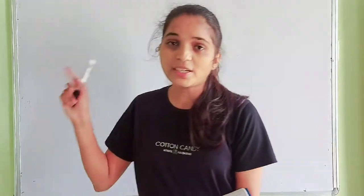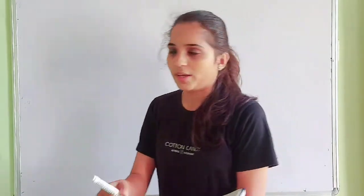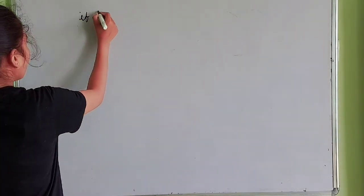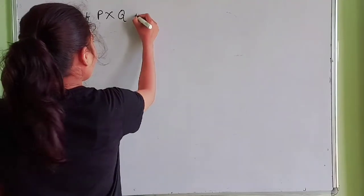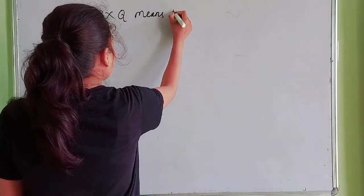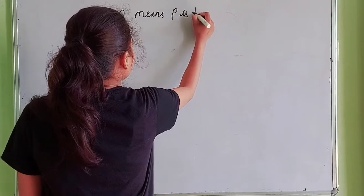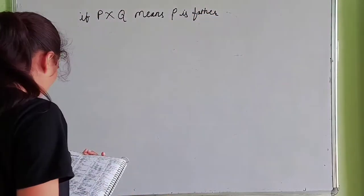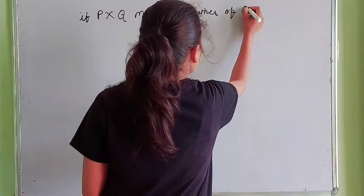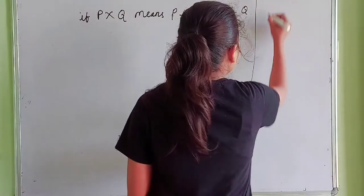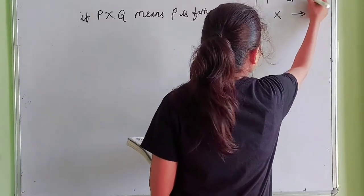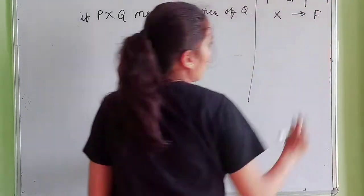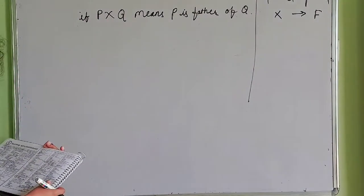The question is, I am writing down the question on the blackboard. So you can see the question is: if P × Q — P × Q means P is father of Q. So when we write P × Q, P is father of Q. F for father.